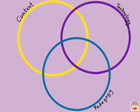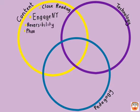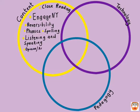First, as you can see, we have our triple Venn diagram with content, technology, and pedagogy. So let's go ahead and start out with our content. There are many different forms of content in our classroom, and here are just a few of them, which could of course depend upon your grade level and your class. These are just some general ones that you may see in classrooms.